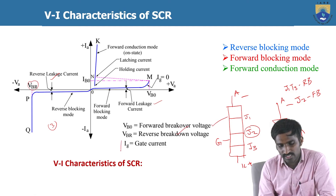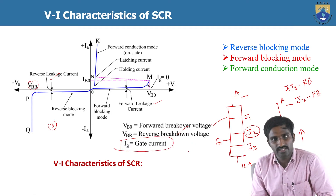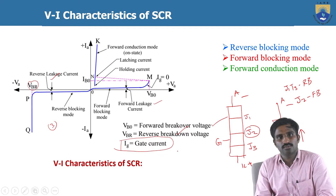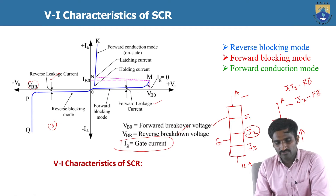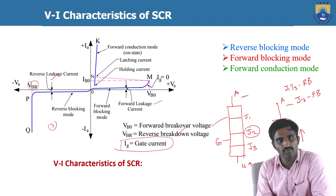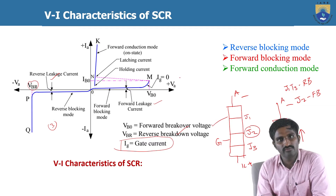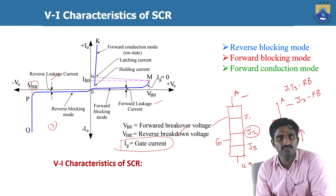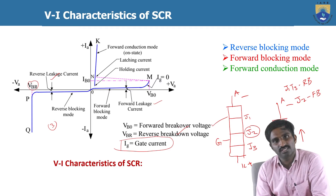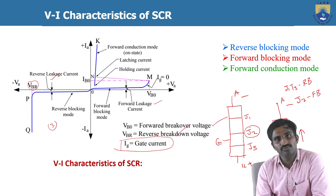Another important term is the gate current and its role in the operation of the SCR. Even when the forward break-over voltage is reached, the thyristor will not turn on until you give the gate signal. You have to give the gate current, and for every device there is a minimum gate current required. We usually give two to three times more than the minimum gate current required to turn on the thyristor.